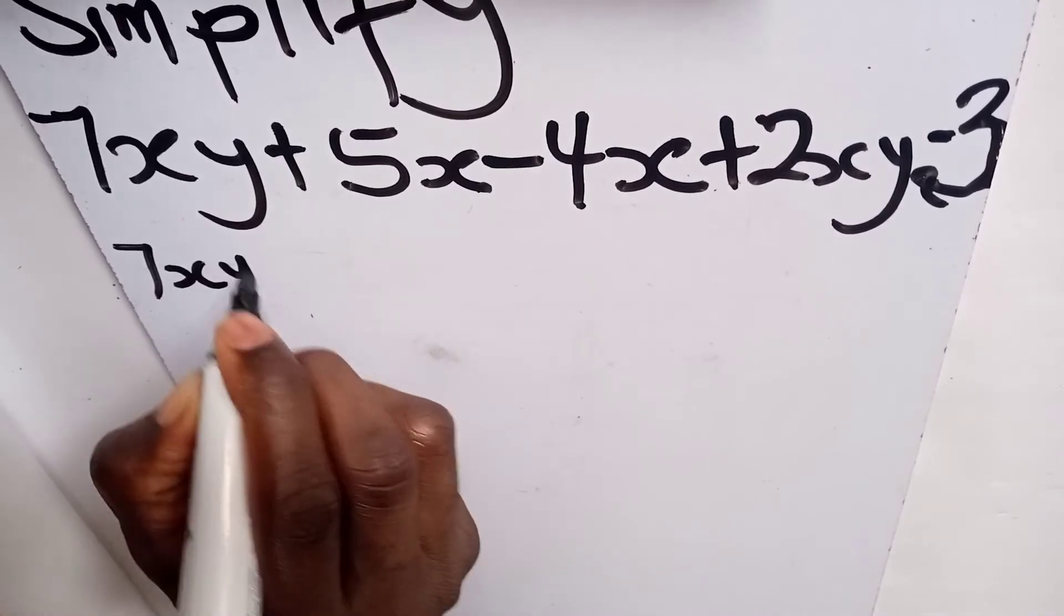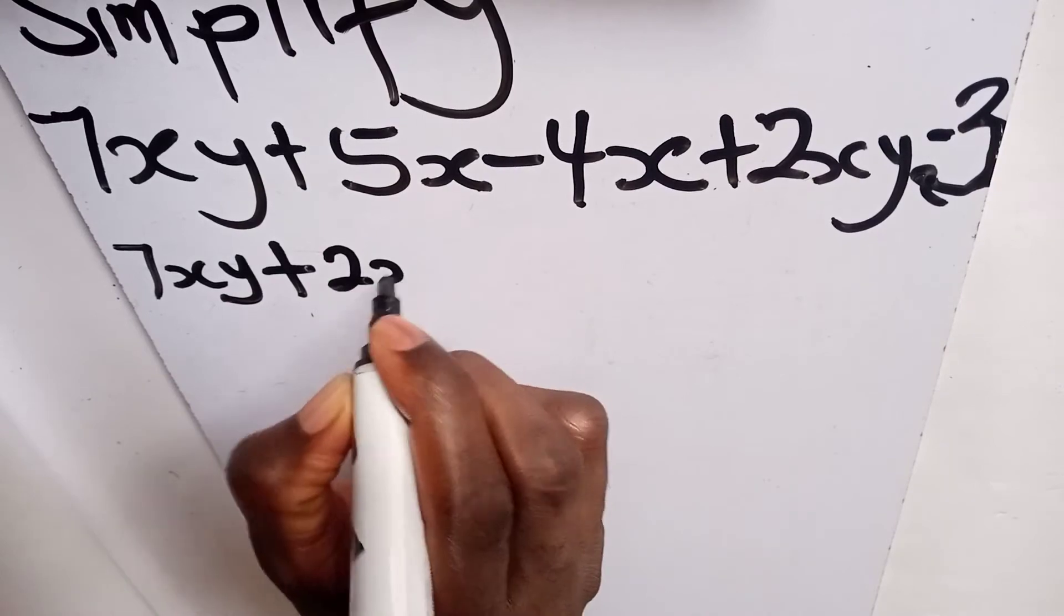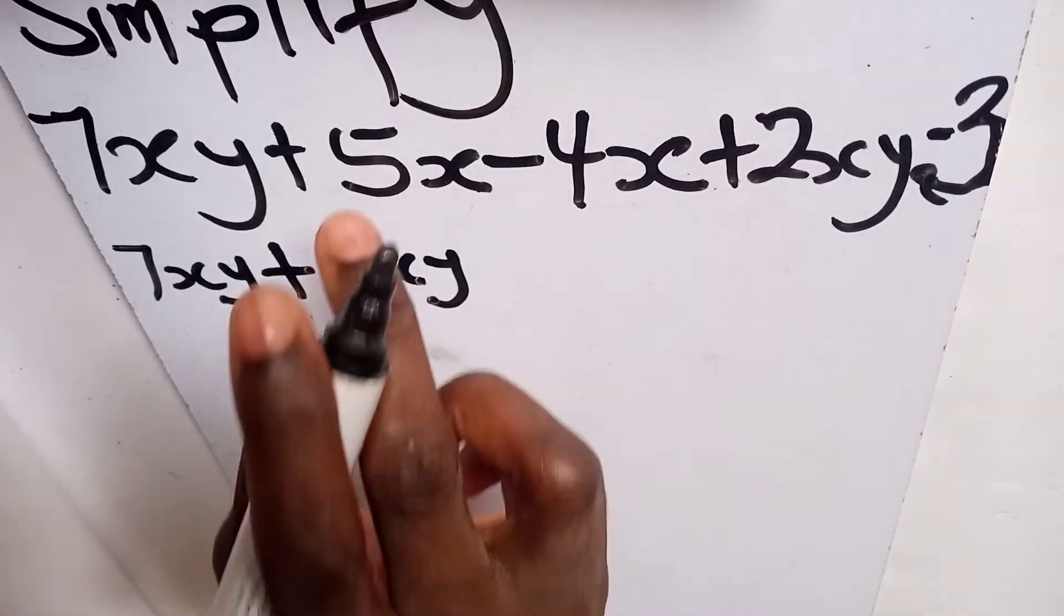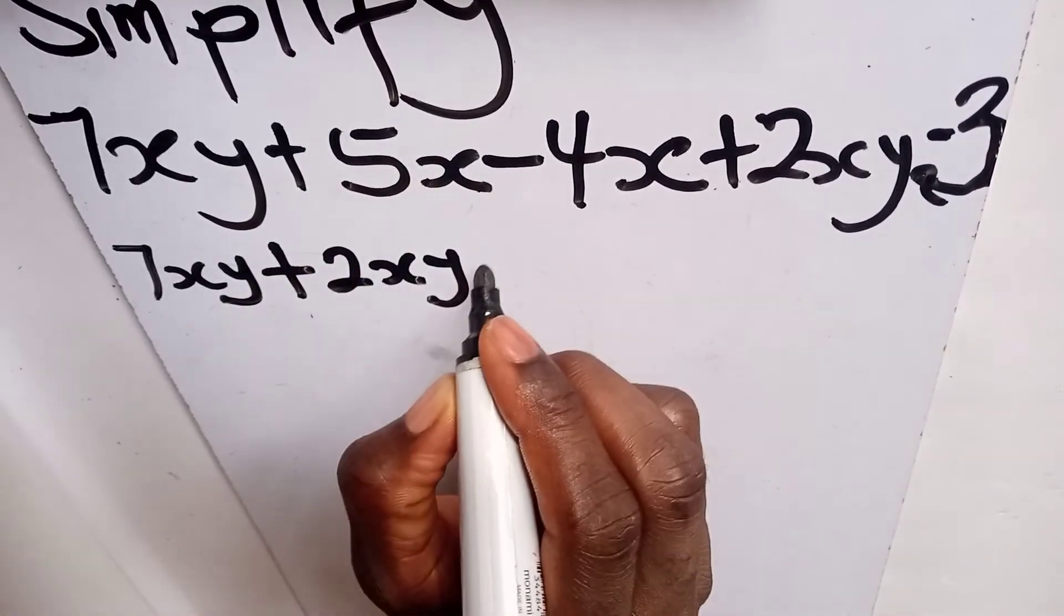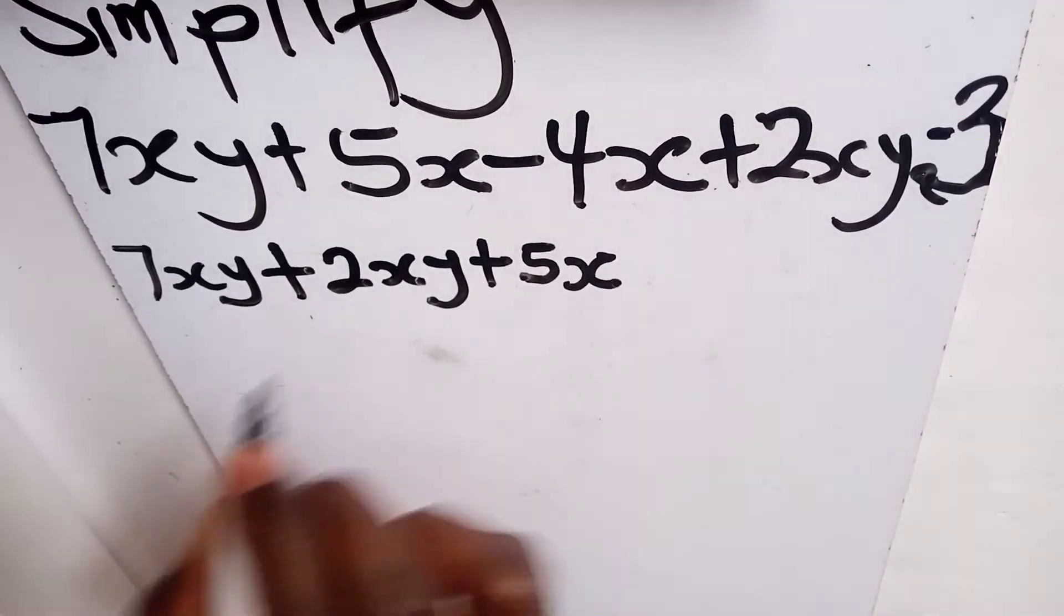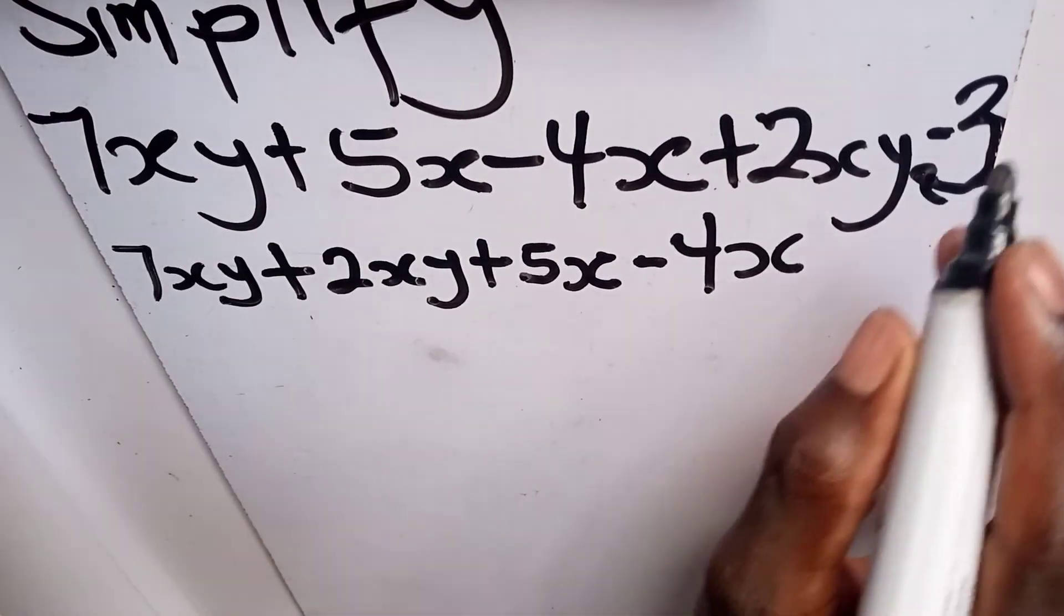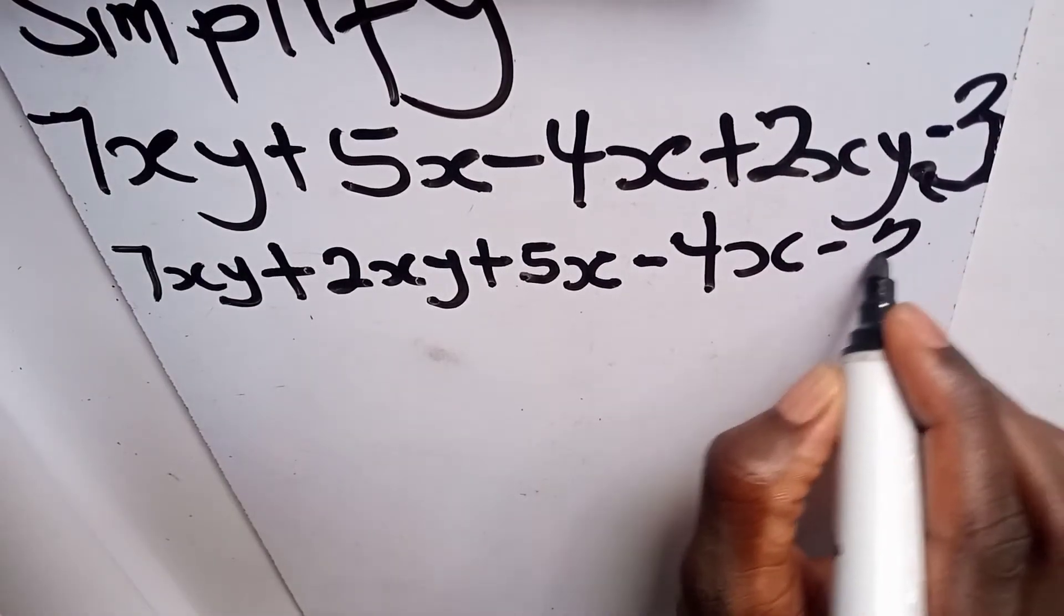Which is 7xy plus 2xy, then we come and take this one, plus 5x, then minus 4x, then we bring our constant number, which is 3.